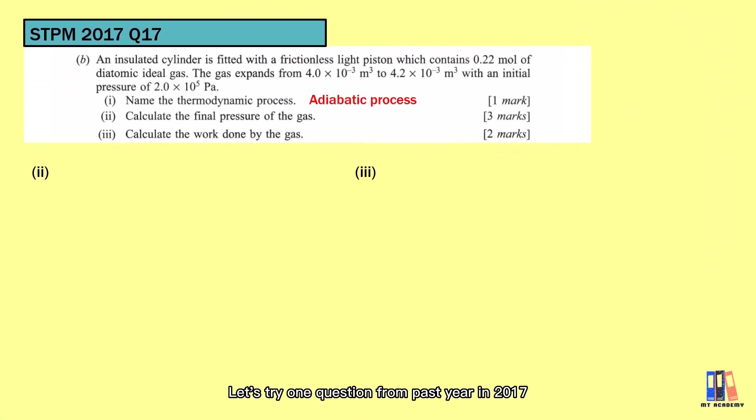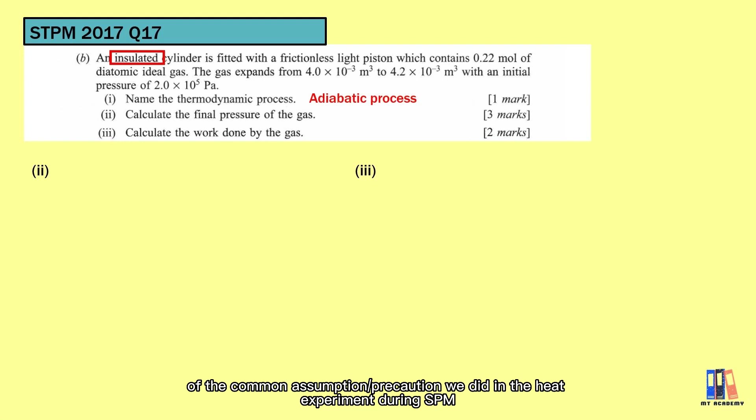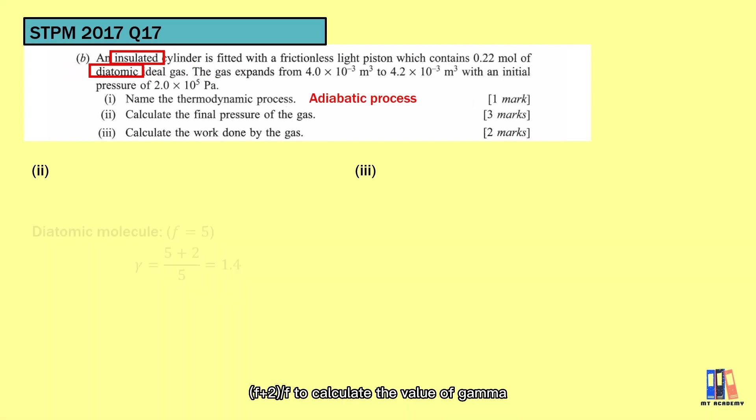Let's try one question from past year in 2017. The word insulated here means that the system won't be affected by the temperature surrounding, which is one of the common assumptions we did in the heat experiment during SPM. Therefore, the system here is in adiabatic process. It also mentioned about the diatomic molecule, where you can apply the formula F plus 2 over F to calculate the value of gamma, which will be equal to 1.4 in this case.